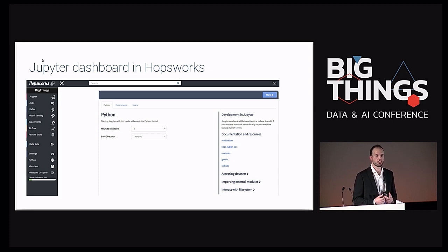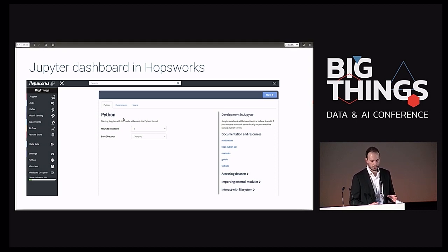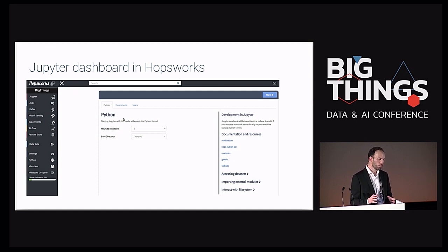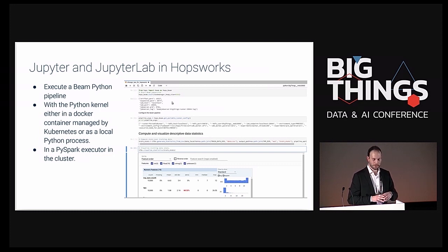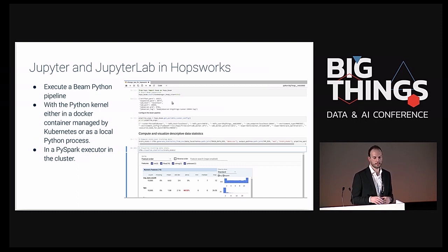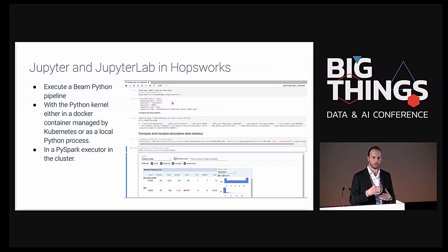For the infrastructure part: if you want to start a Jupyter notebook, you go into the Jupyter dashboard in HopsWorks and can select different settings — whether you want to run pure Python or Spark, for example. You can execute a Beam Python pipeline from Jupyter and JupyterLab in many different ways. You can run your pipeline in a pure Python kernel, or use Spark to orchestrate execution of Python programs in the backend — this is transparent to the user, who just needs to select the PySpark kernel. The Python kernel runs in a Docker container managed by Kubernetes in the HopsWorks installation.